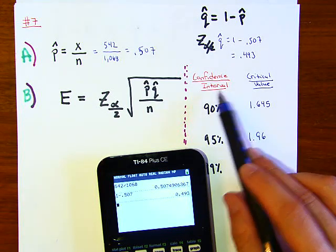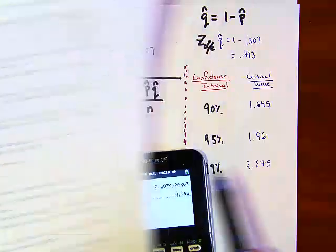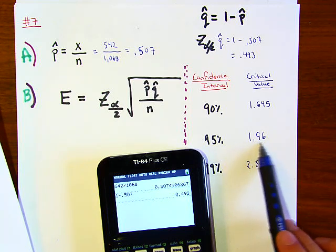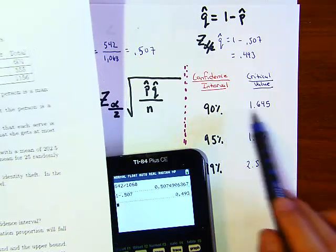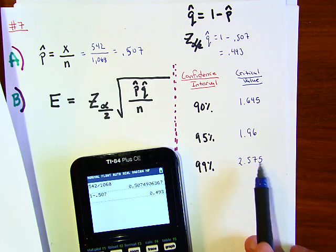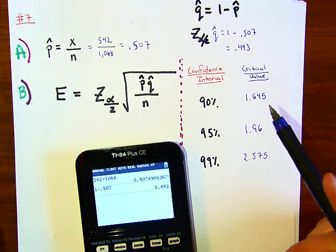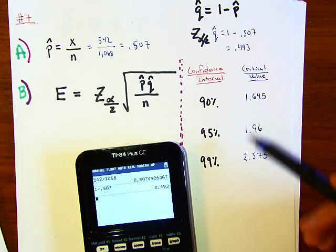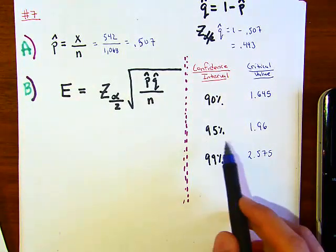This z alpha over 2 represents the confidence, the z value of our confidence interval. The problem is stating 95% confidence interval, so we're going to use 1.96 and substitute that into this part over here. If the question said 90%, you're going to use this value. If the question said 99%, you have to substitute this value. I doubt we would ask any other confidence interval. These are the three that you should definitely know.